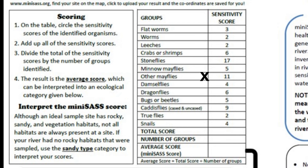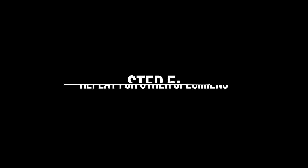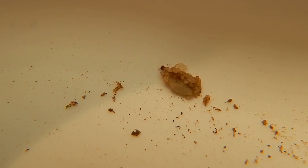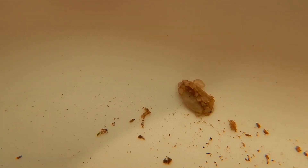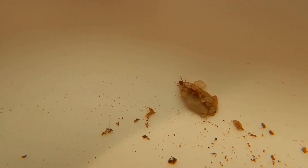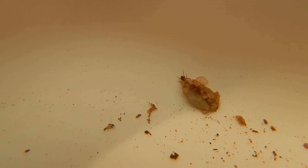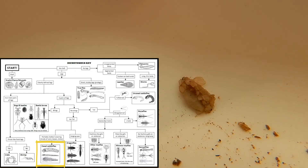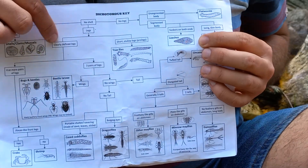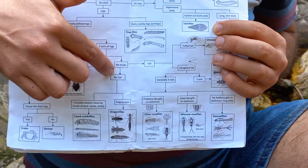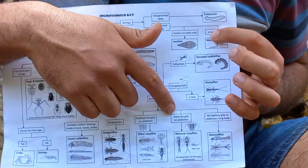Step 5: Repeat the process for other specimens. Here, we have a creature carrying armor that it made itself, using pebbles and sand grains that it found in its environment. Using the dichotomous key, we can identify this as a cased caddisfly. Again, we mark it on our data recording sheet and carry on. Repeat this process as many times as is needed to record all the specimens you caught during your survey.